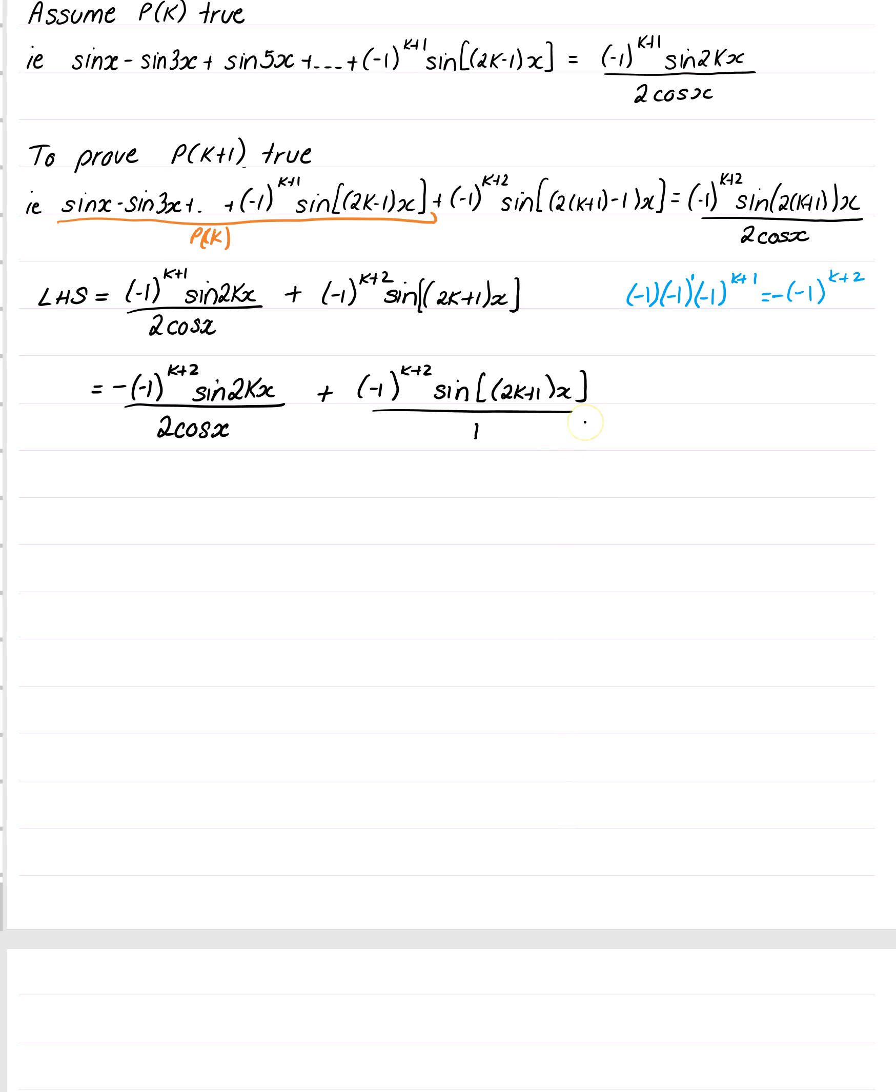So to make this have the same denominator as 2 cos x, I'm going to times the top and the bottom here by 2 cos x. And we'll just write that. So I'm going to times that by 2 cos x. And I'm going to times the bottom by 2 cos x.